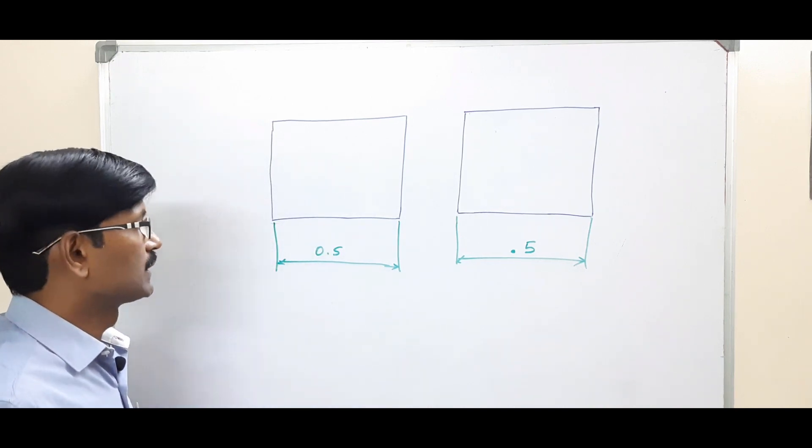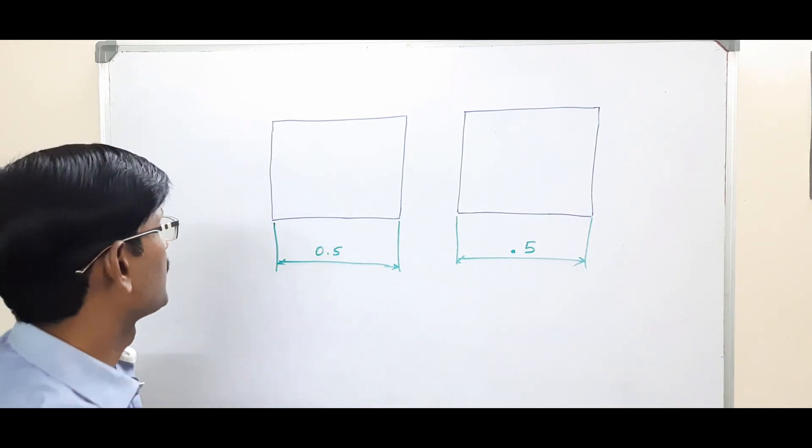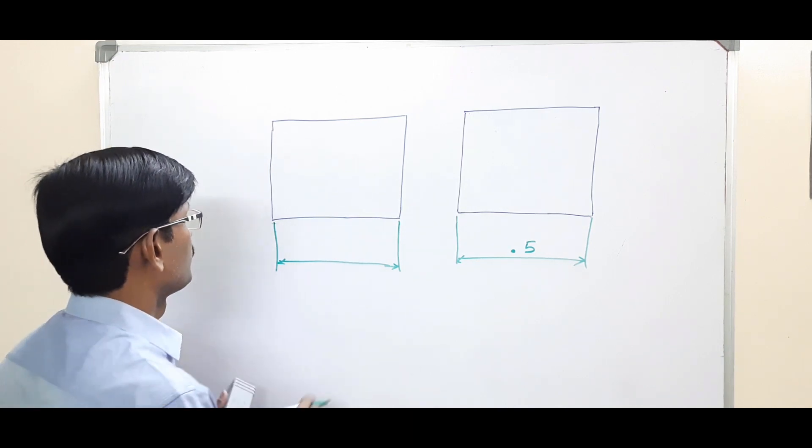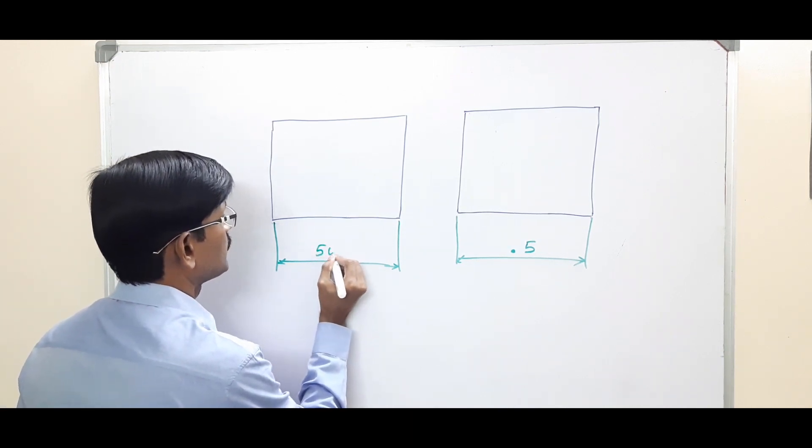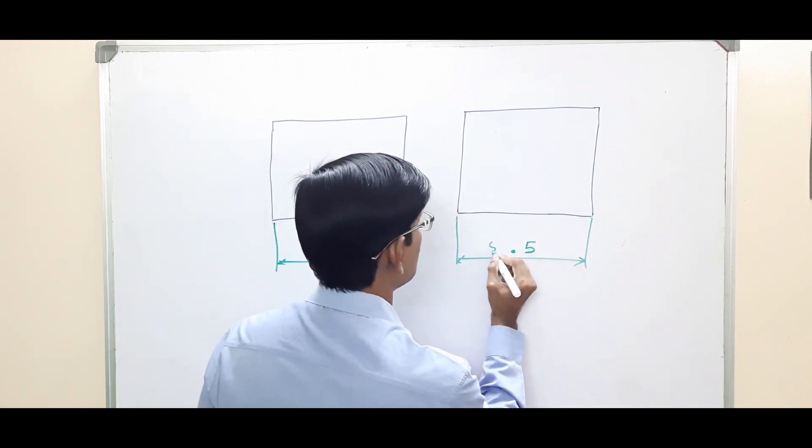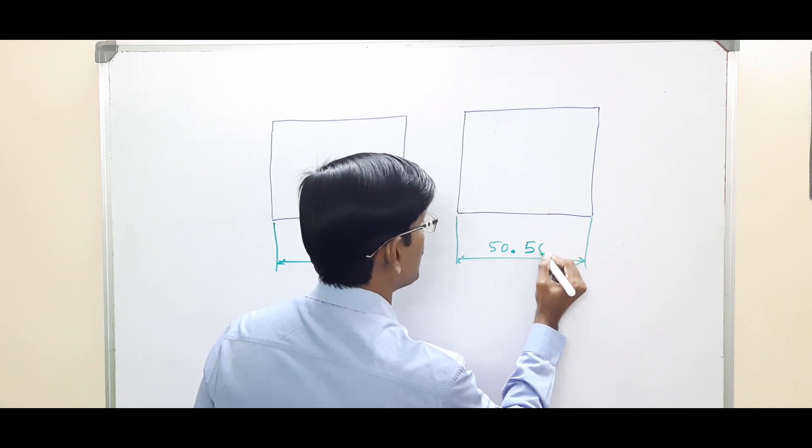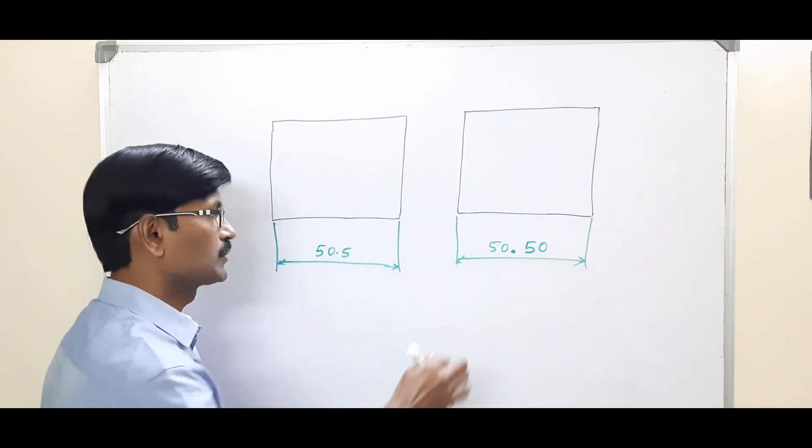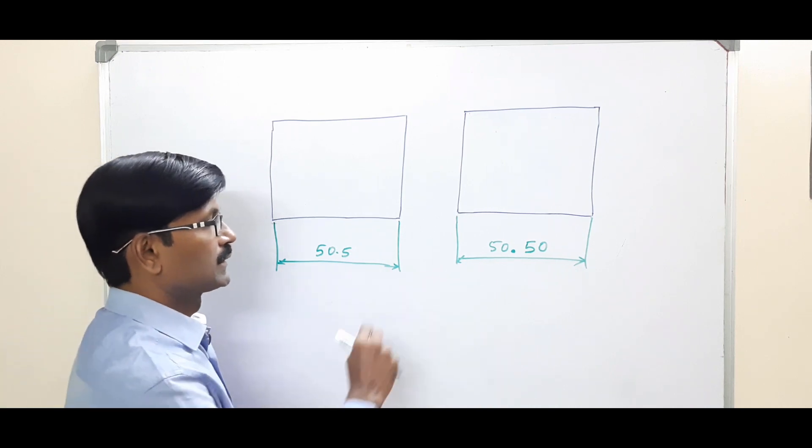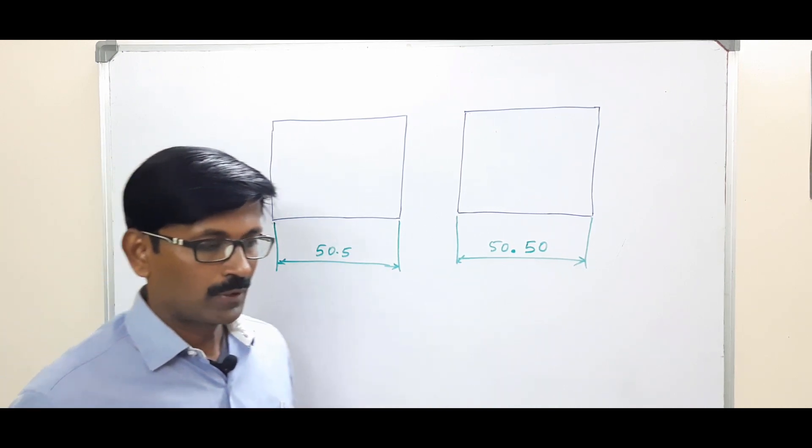Then what we have is whenever it is greater than a whole number by a fraction—let's say this dimension is 50.5—then it is 50.5 millimeters. Whereas in this case, we write it as 50.50, so we add a 0 after the decimal place, which tells that it is an inch basis system.